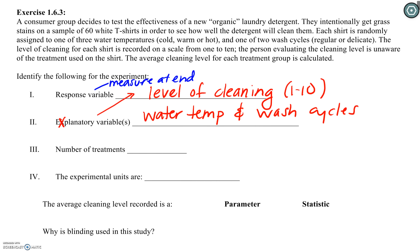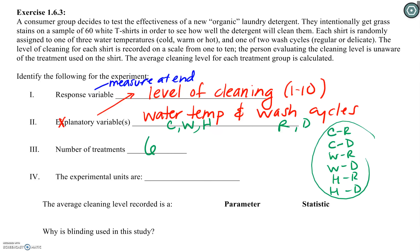Water temperature had three levels: cold, warm, and hot. Wash cycles had two levels: regular or delicate. This is exactly like the CT and embedded counseling example — we have six different treatments: cold-regular, cold-delicate, warm-regular, warm-delicate, hot-regular, and hot-delicate. Those are your six different treatments.